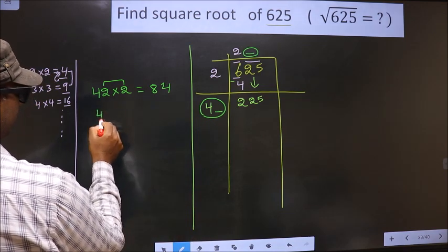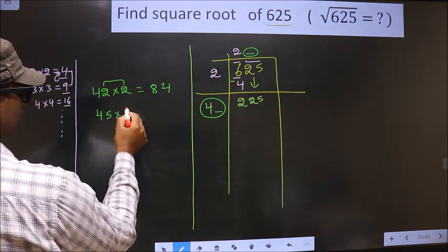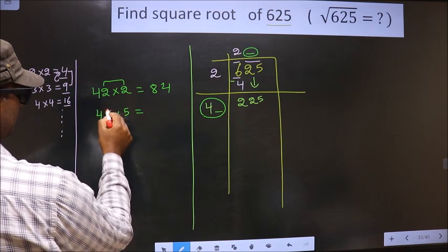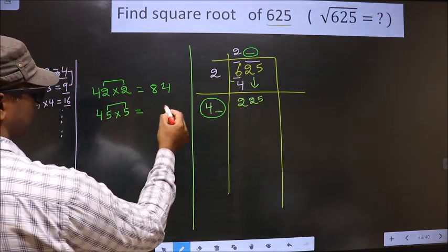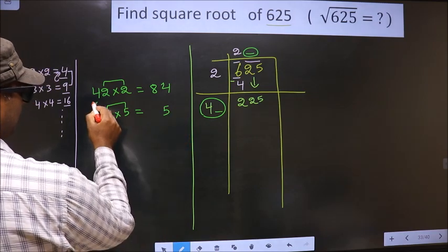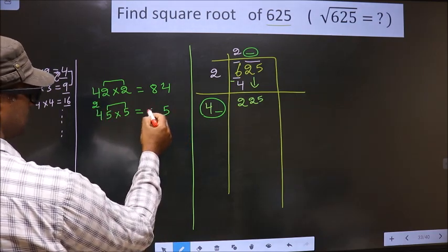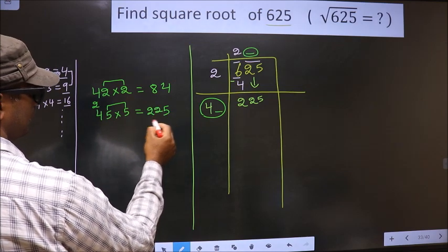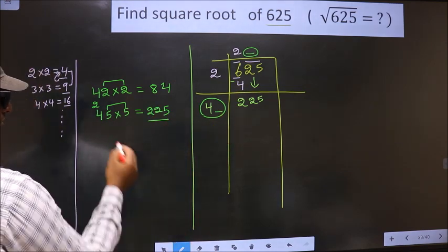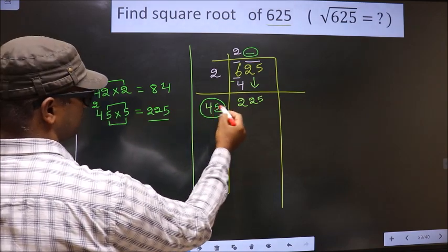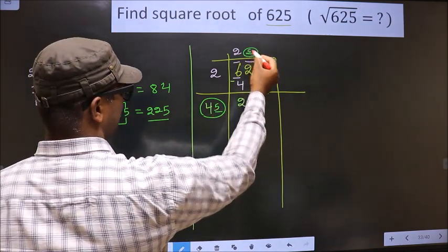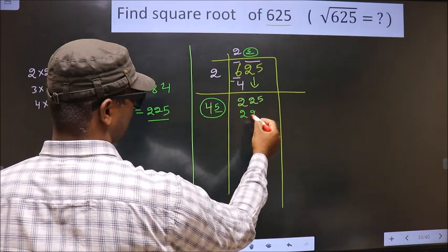If we take 5, we should also multiply by 5. These two numbers should be same. So 5 × 5, 25. 5, 2. 5 fours 20 plus 2 is 22. We got exact 225 for the number 5. So we take 5 here and here we get 225.